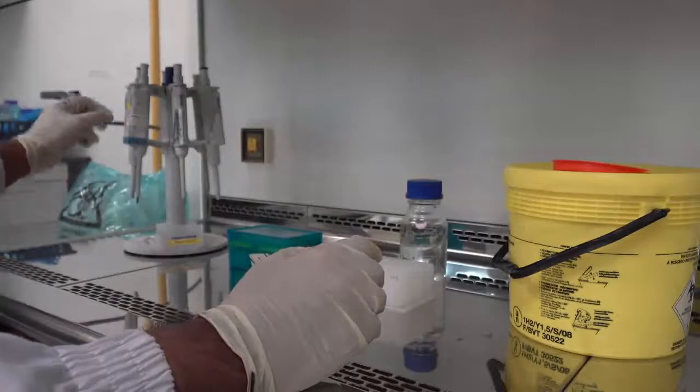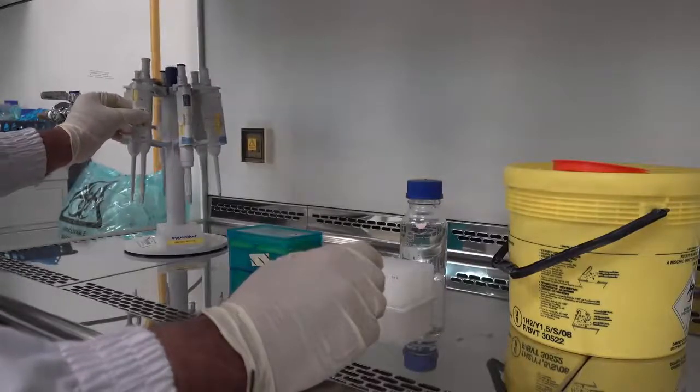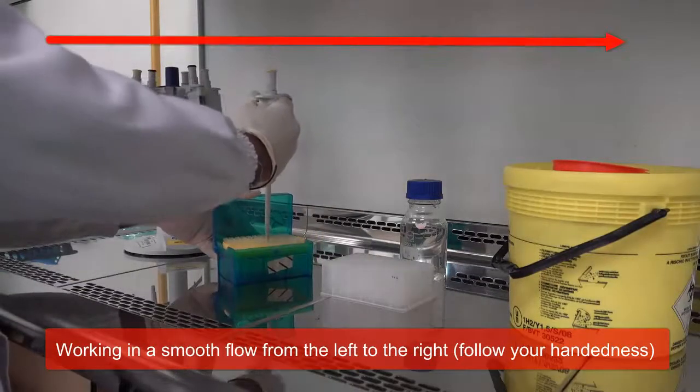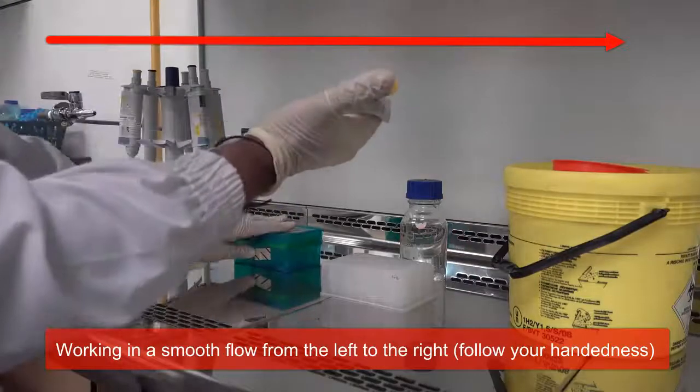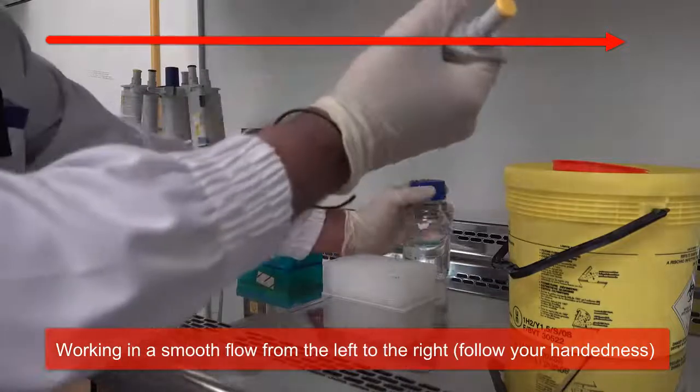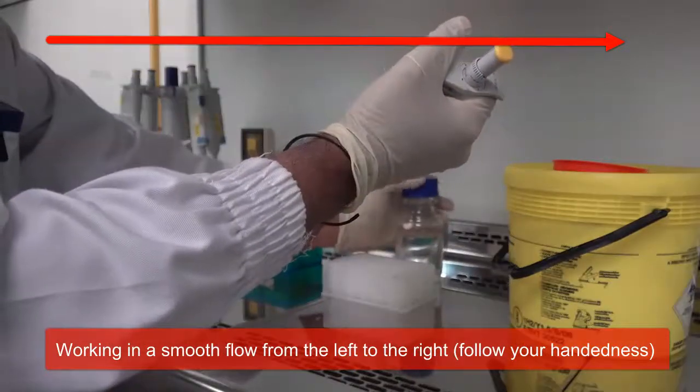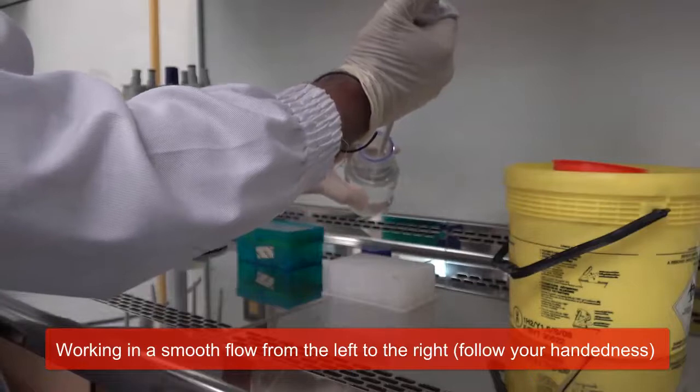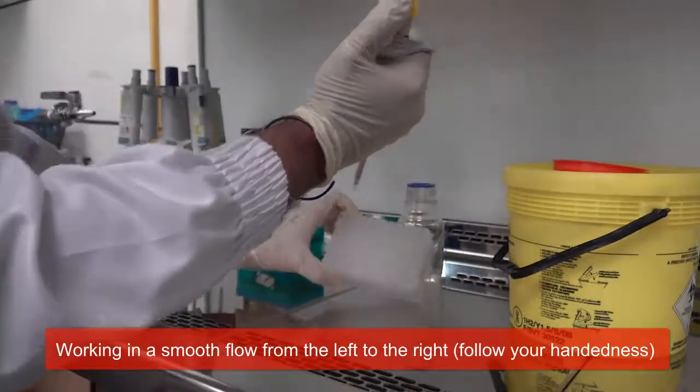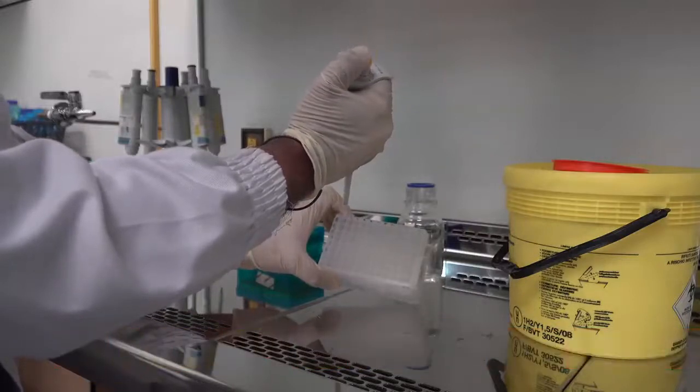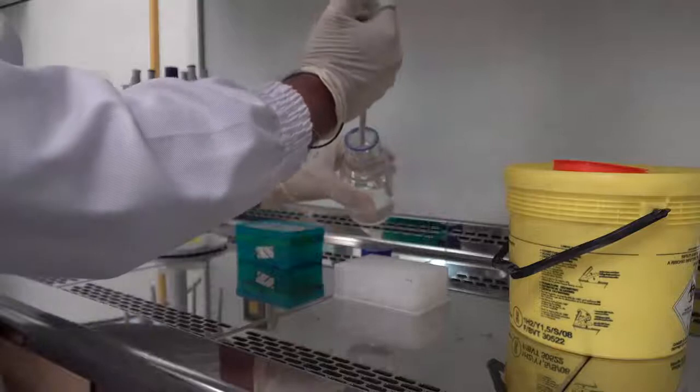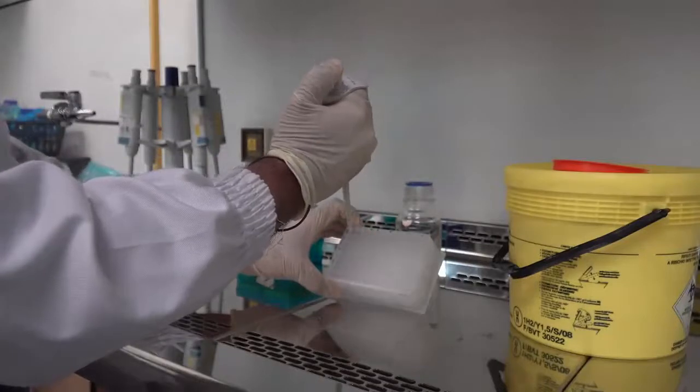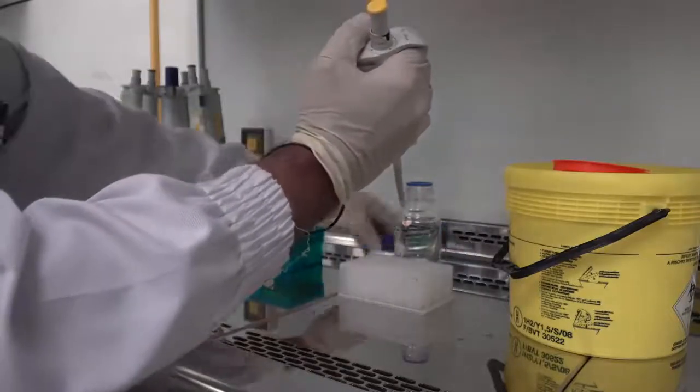When we work, we generally work in a smooth flow. So as you can see I am going to select the pipette and then I install a pipette tip. I set the volume and I am going to withdraw this sample from this bottle and dispense it in the appropriate slot. This is smooth operation of the entire process.